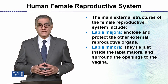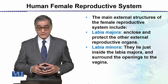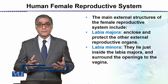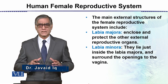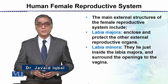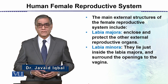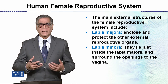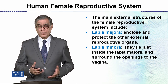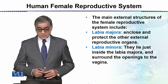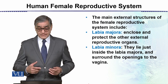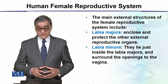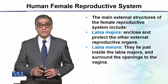The main external structures of the Female Reproductive System include the Labia Majora and the Labia Minora. These are lip-like structures which cover the opening of the vagina, which is the canal that later develops into the birth canal in a mature woman. The Labia Minora lie just below the Labia Majora and surround the opening of the vagina.